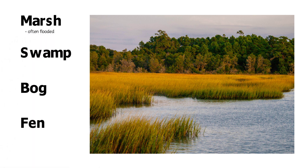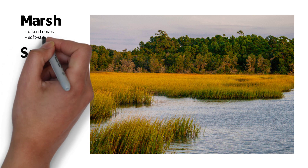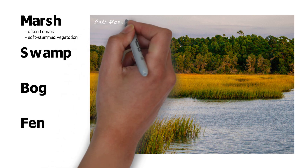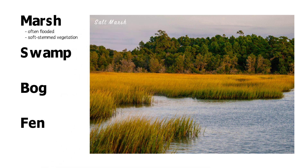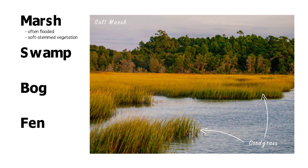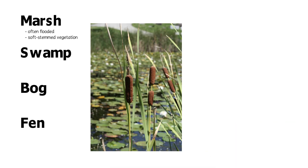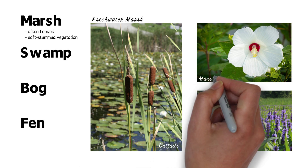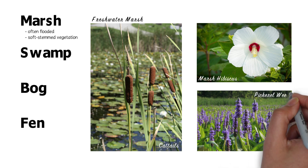A marsh is a regularly flooded wetland with soft-stemmed vegetation. Coastal marshes exposed to tidal flooding are called salt marshes. Few plants can tolerate this harsh environment. Salt marsh cordgrass is one of the most common salt marsh plants. Freshwater marshes have much greater plant diversity. Some of the many plant species found in freshwater marshes include cattails, marsh hibiscus, and pickerel weed.